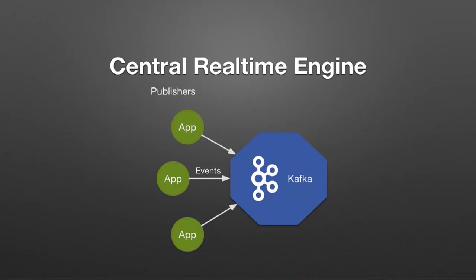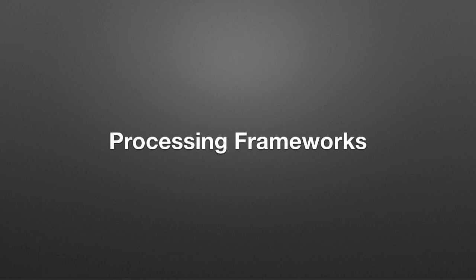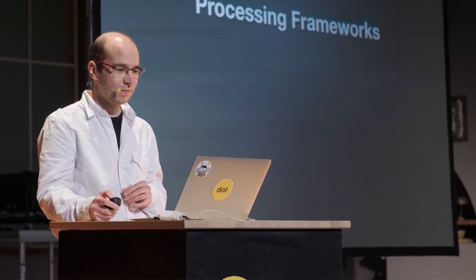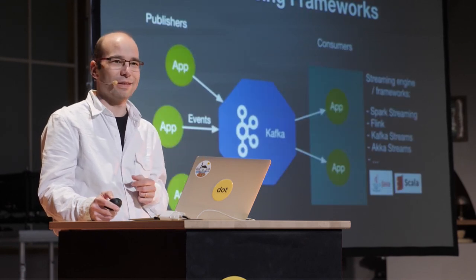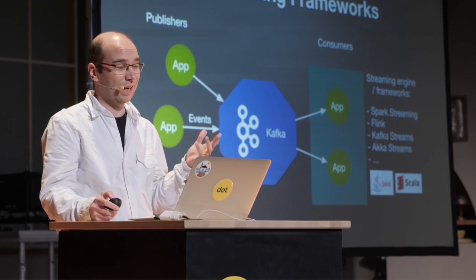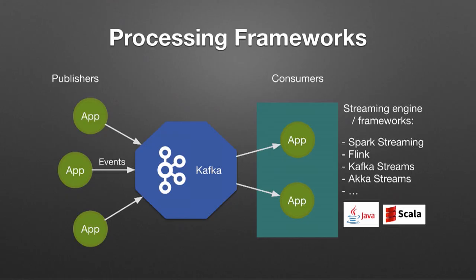Now let's quickly review the traditional design of streaming architectures. At the core, you have a real-time event broadcast engine — generally Apache Kafka, but other tools like RabbitMQ or an MQTT server can be used. Then you have a processing framework that helps publish and receive events, acting as a runtime layer for your service platform. Typically, you write your components in Java or Scala, leveraging Spark, Flink, Akka, Kafka Streams, and so on. The code leveraging those complex frameworks is hard to understand, master, and operate.